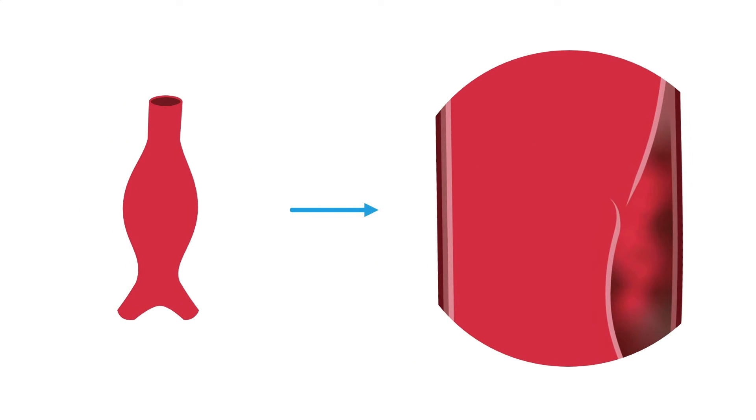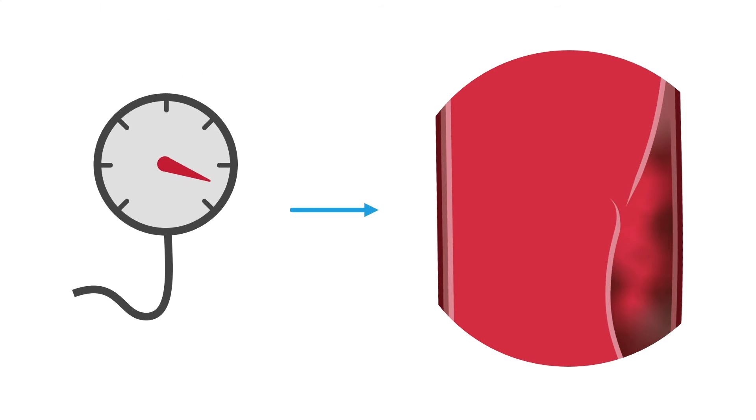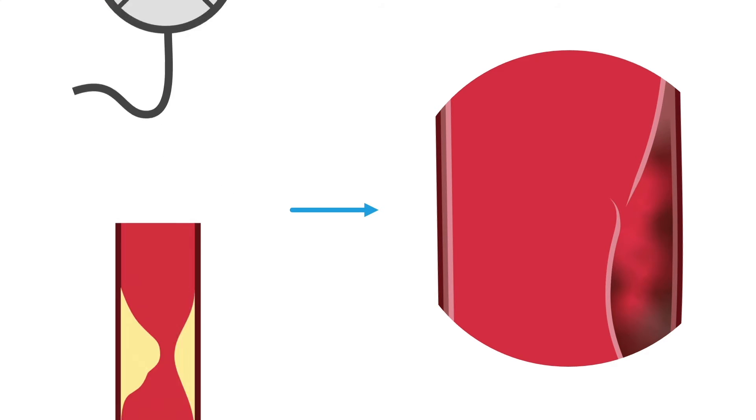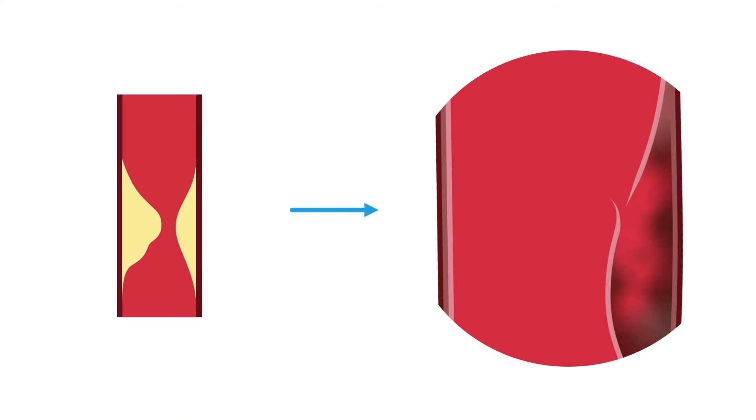Dissections can be caused by aneurysm as the wall weakens with the ballooning of the artery. Other causes include hypertension and plaque in the artery.